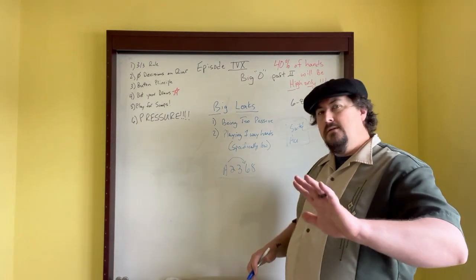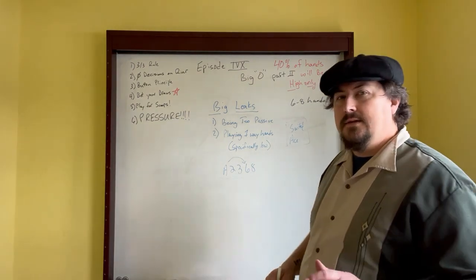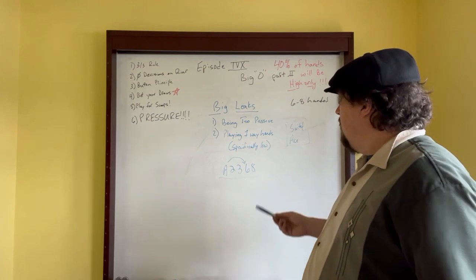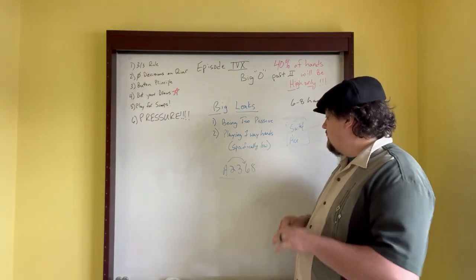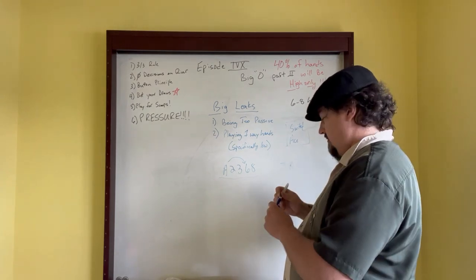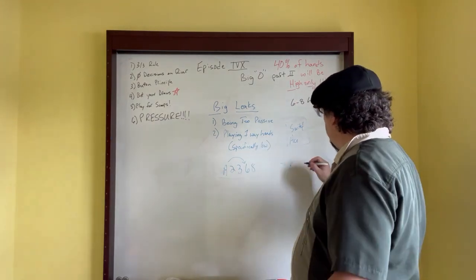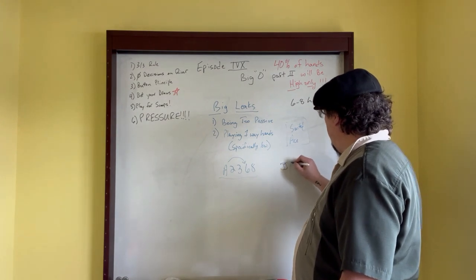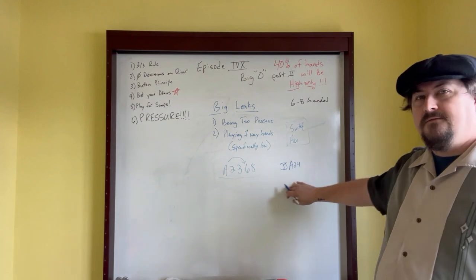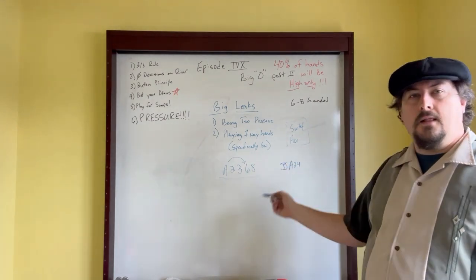But in a situation like this, I would much rather have jack jack ace deuce four over ace deuce three six eight. Keep in mind, 40% of the time there's not going to be a low. So all these ace deuce three combinations are not going to apply four out of 10 times. That doesn't mean don't play them. It just means ace deuce four jack jack, or even ace four five jack jack, I would rather have than ace deuce three six eight.